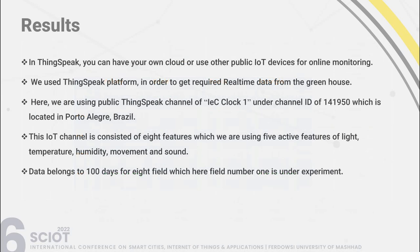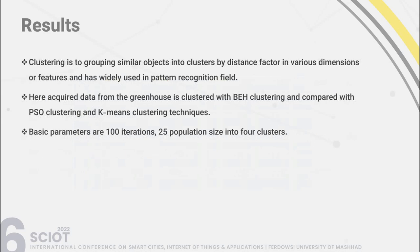In the ThingSpeak platform, you can have your own cloud or use other public IoT devices for online monitoring. The ThingSpeak platform is used to get required real-time data from the greenhouse. Specifically, the public ThingSpeak channel of IEC clock under channel ID 141915, located in Porto Alegre, Brazil, is used. This IoT channel consists of eight features, of which five active features are used: light, temperature, humidity, movement, and sound. Data belongs to 100 days for eight fields, with field number one under experiment for this research.